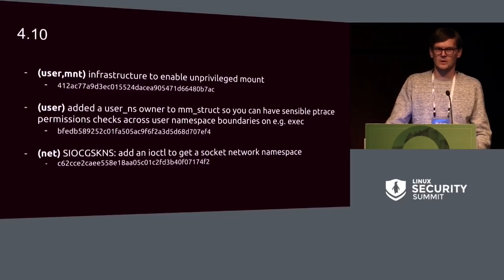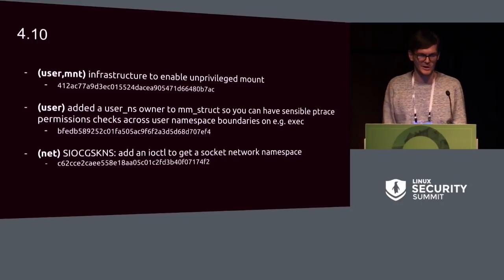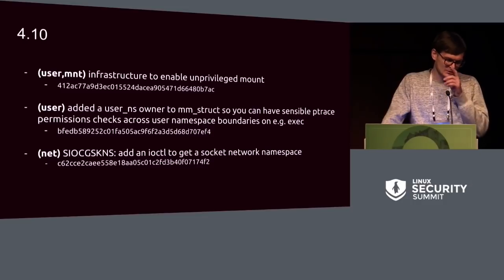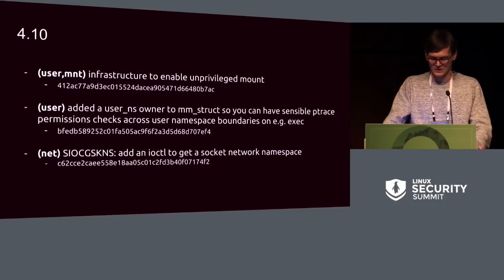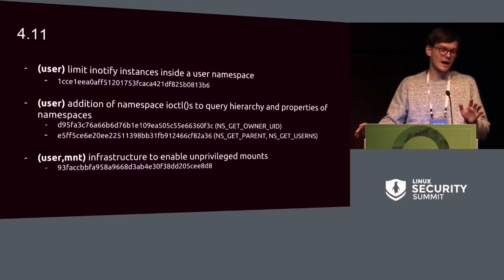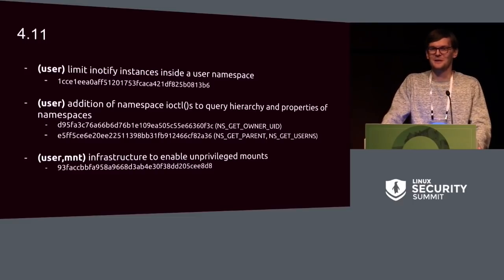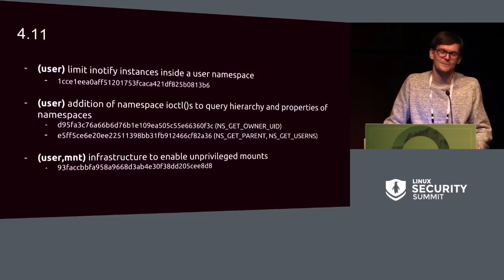In 4.10, André Vagan added an ioctl to get a socket's network namespace — so you can ask which network namespace a given socket file descriptor belongs to. In 4.11, we finally got a limit on inotify instances per user namespace, because previously you could exhaust the global inotify limit from within a user namespace without it being accounted for. That landed in 4.11 as a security fix.